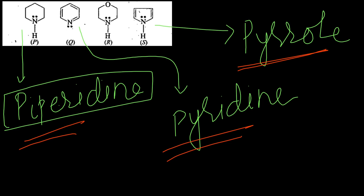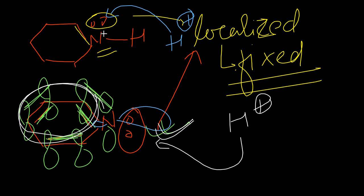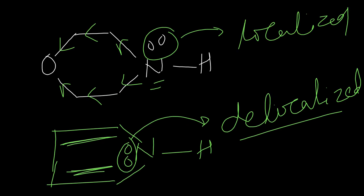S has the least basic strength because the electrons are not free. If you talk about P, Q, R - nitrogen atoms have lone pairs. Nitrogen makes a lone pair, and we need to compare their hybridization states.